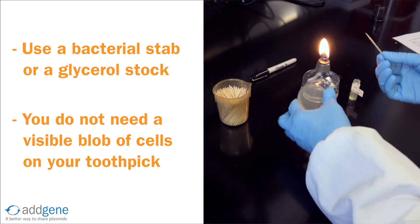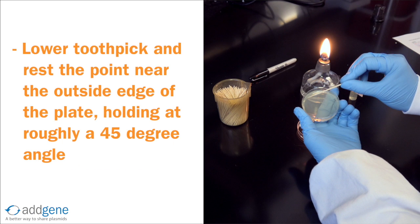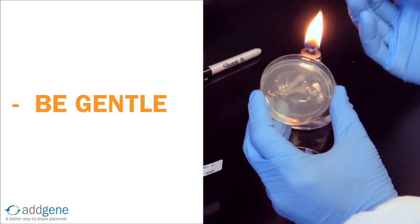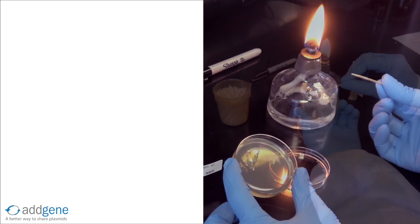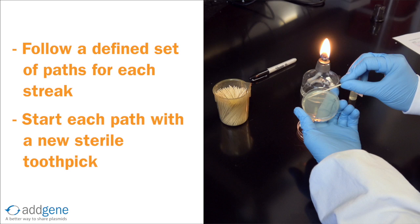With the tip of the toothpick now covered in bacteria, we can begin streaking. We lower the toothpick and gently rest the point near the outside edge of the agar plate, holding the toothpick at roughly a 45 degree angle. Be sure to be very gentle and not to stab the plate with the toothpick, or you'll dig up some agar during the streaking process. We'll follow a defined set of paths for the streak, remembering to start each path with a new sterile toothpick.